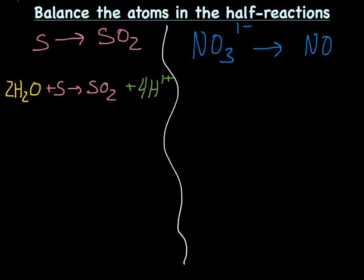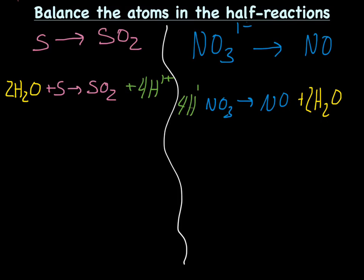On to the reduction half. The N's are good on both sides. We have three oxygens on the reactant side and only one on the product side, so we need to add waters to the product side: NO3(1-) → NO + H2O. We need two waters to get three oxygens total on the product side. Now we have three oxygens on both sides. Next, we need to fix the hydrogens — we now have four hydrogens on the product side, so we need to add four hydrogen ions to the reactant side. Now both halves have the same number of atoms on both sides.